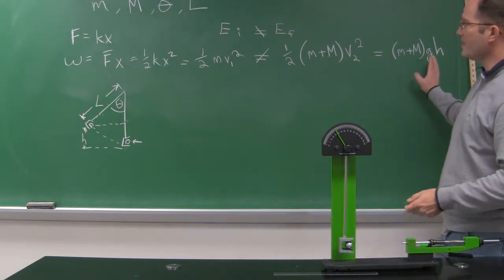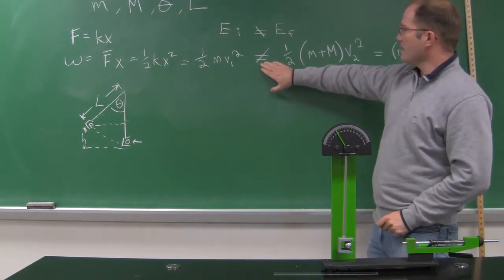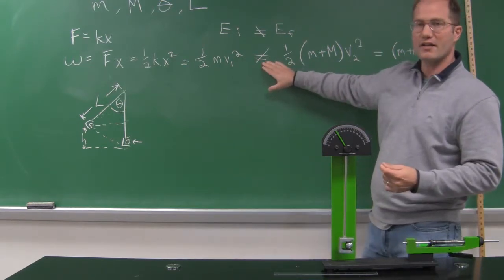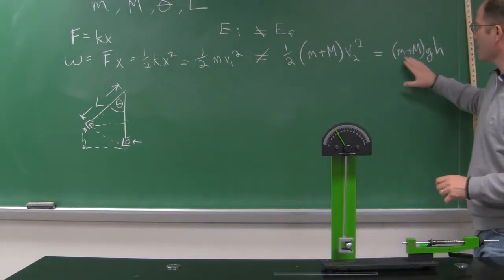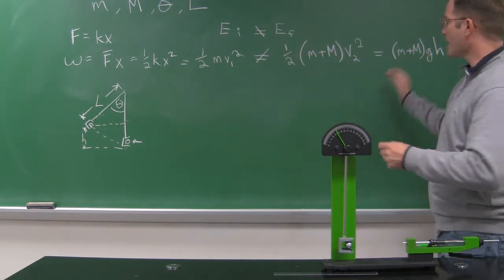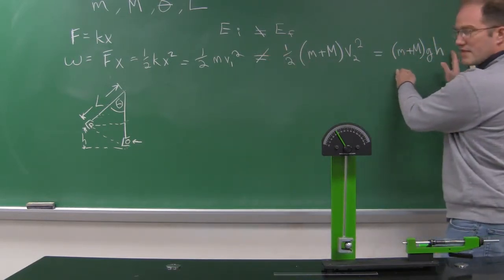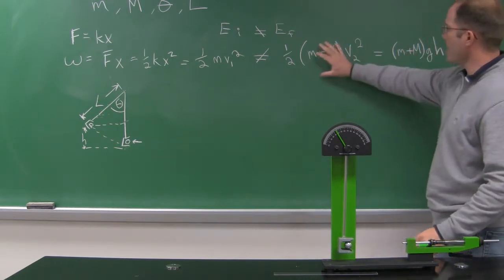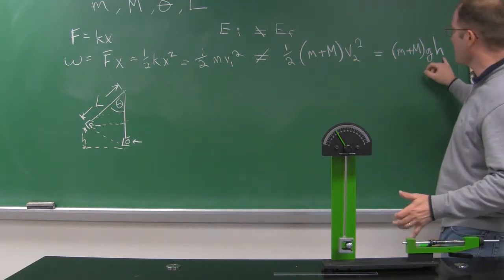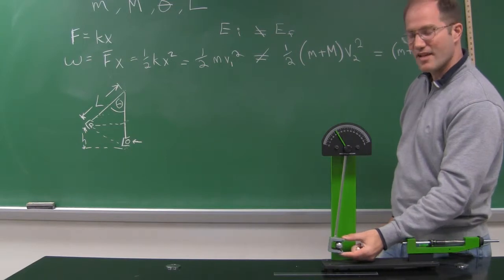You've got this long string of energy relationships, but we're stymied by this inequality at the collision. If I knew the height, G, and the masses, I can work backwards. I'll set the energy after the collision equal to the potential energy at the top: (little m plus big M) times G times H. I know little m, big M, G, and H. I don't know V₂ squared, but I can solve for it using algebra — telling me how fast the system was moving after the collision.